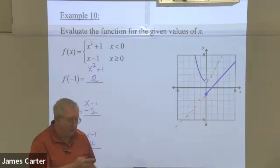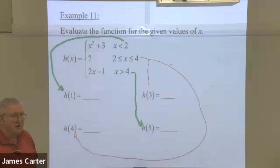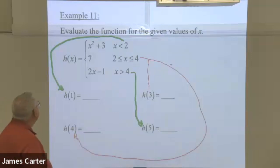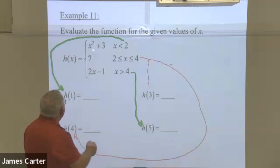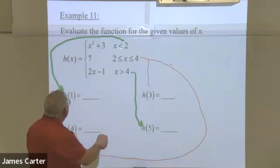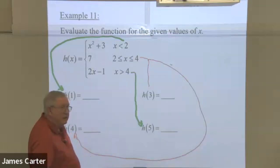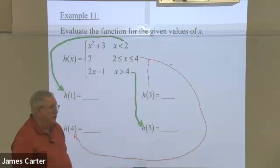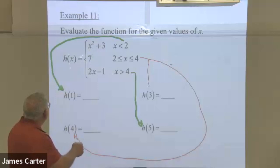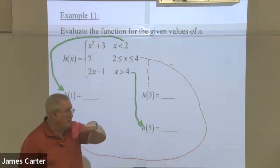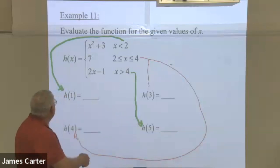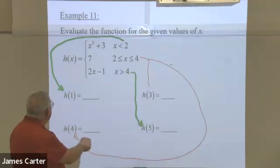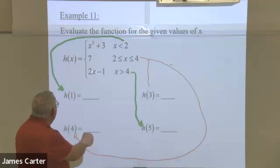Let's look at a more extensive example where they don't give you the graph and you have to figure it out mathematically. In this case we have three equations: a quadratic where we keep things smaller than two, a horizontal line at y equals seven for the middle interval, and a line with y-intercept of negative one and slope of two over one where values have to be bigger than four.